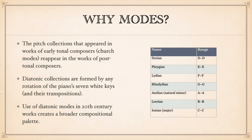Relative — that means sharing the same key signature — relative to C major, Dorian is from D to D, Phrygian from E to E, and so on. You'll notice that when we begin on A, we get natural minor, and when we begin on C, we're back to C major. Locrian mode, from B to B, is not often used and will not be discussed in this video.